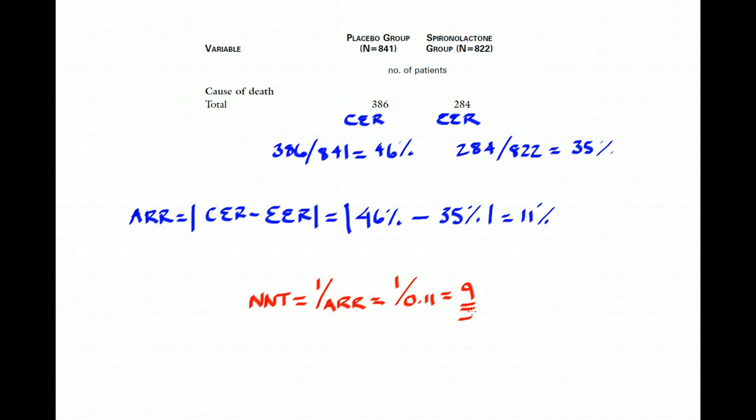So I have to give nine people spironolactone for the duration of the RALS study, which was two years, to prevent one additional death.